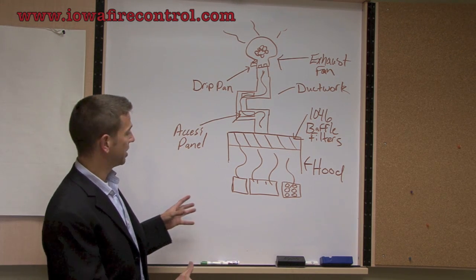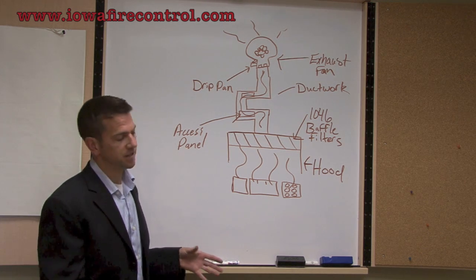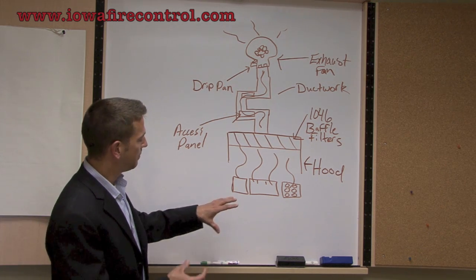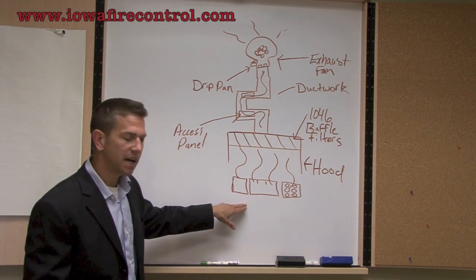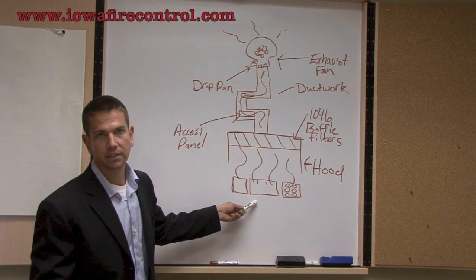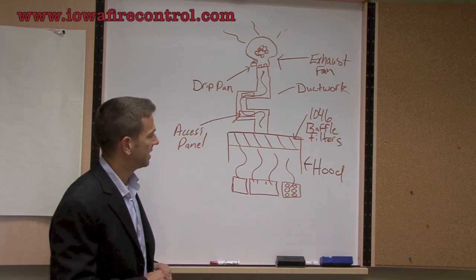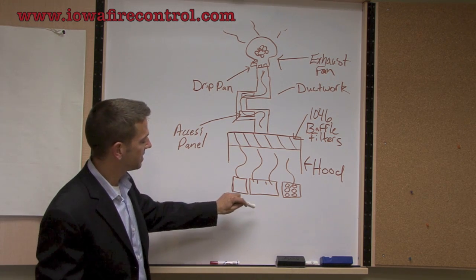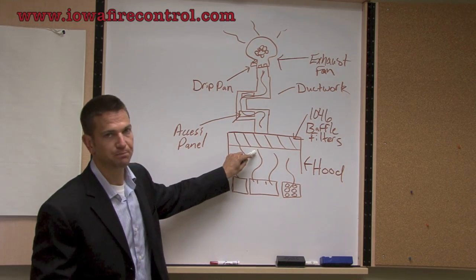So basically I want to start by showing you a broad overview of what happens. Down below we have the appliances. Those appliances create effluent. You use different styles of grease in cooking, animal fat, and that effluent comes up into your hood system.